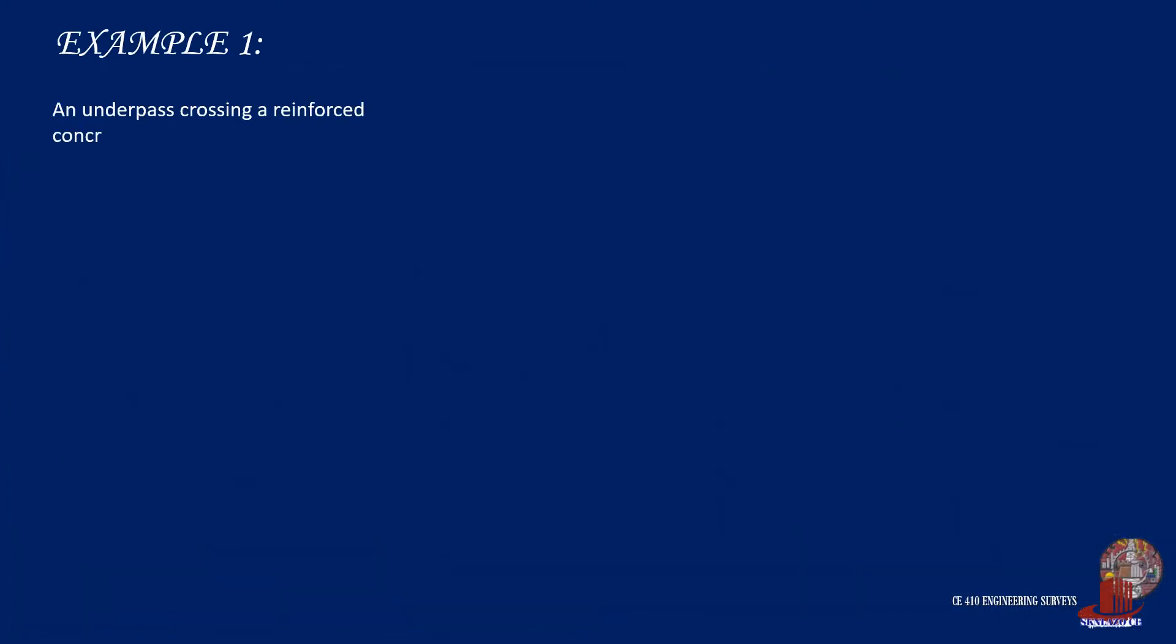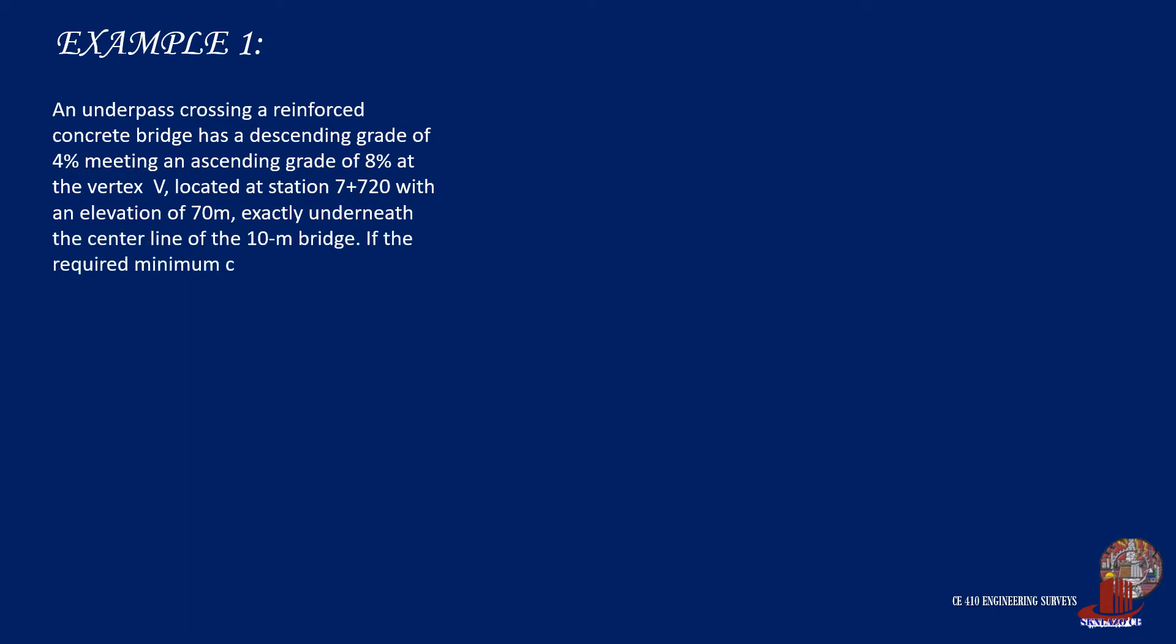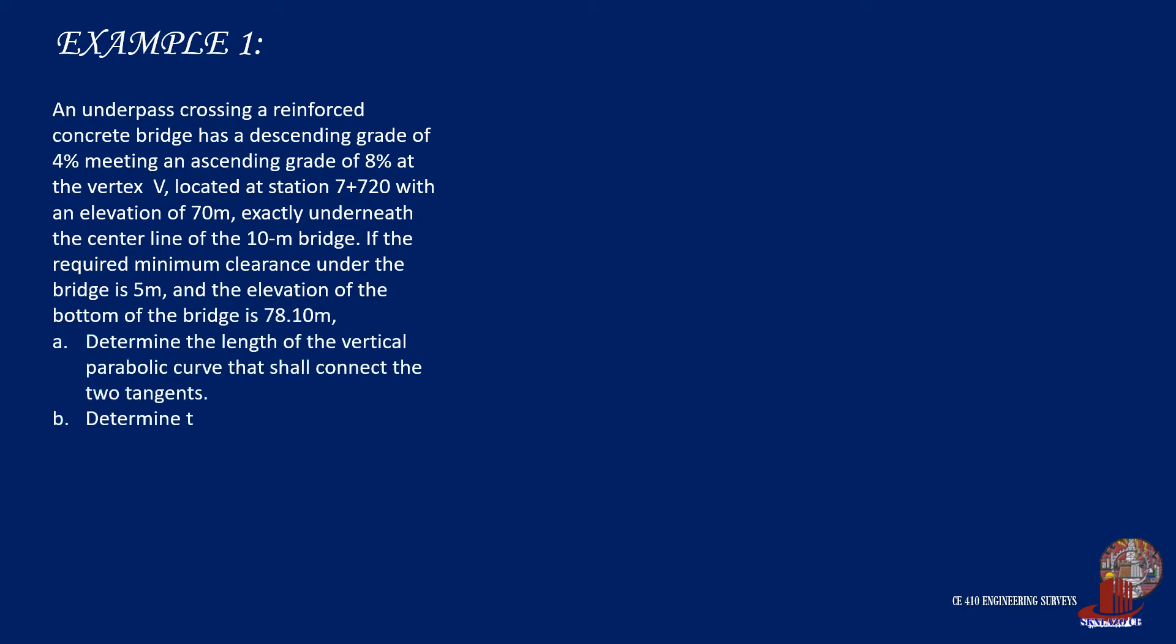Example number 1. An underpass crossing a reinforced concrete bridge has a descending grade of 4% meeting an ascending grade of 8% at vertex V located at station 7 plus 720 with an elevation of 70 meters exactly underneath the centerline of the 10-meter bridge. If the required minimum clearance under the bridge is 5 meters and the elevation of the bottom of the bridge is 78.10 meters: